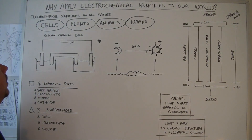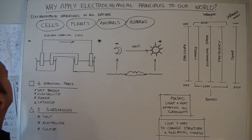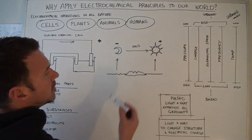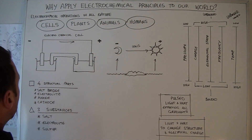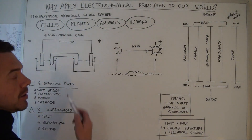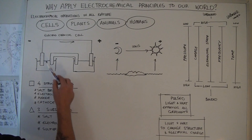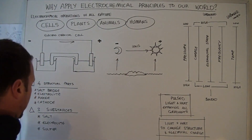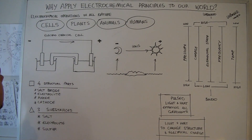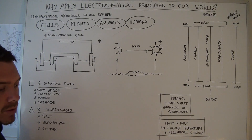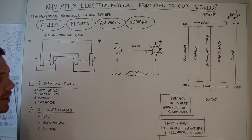This video is about why we should apply electrochemical principles to our world. Electrochemical operations are in all of nature — in all living things, in cells, in plants, in animals and humans. It covers all of our scientific fields. It is a little bit like geometry is to mathematics.